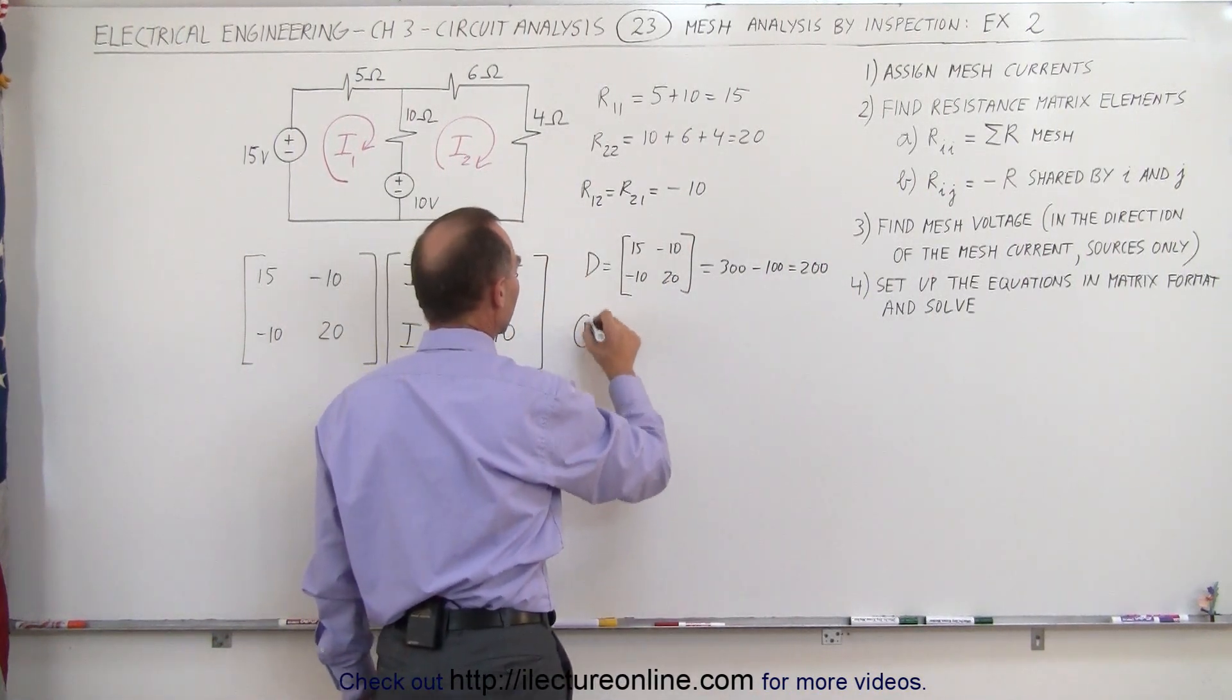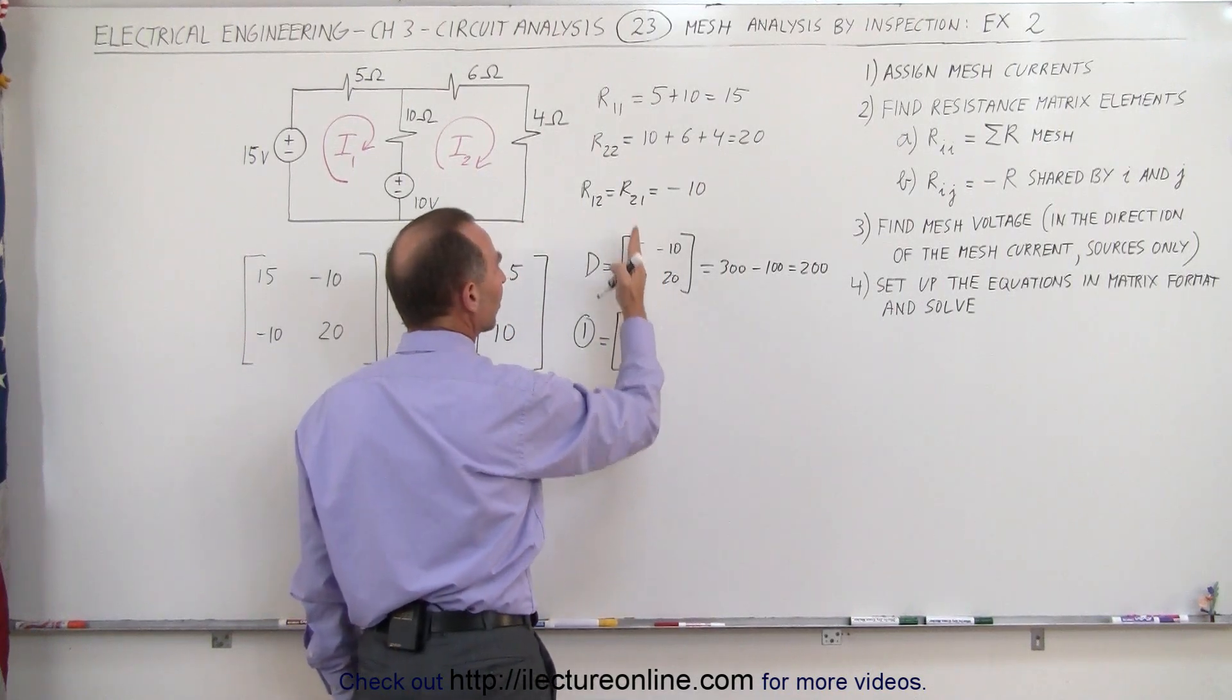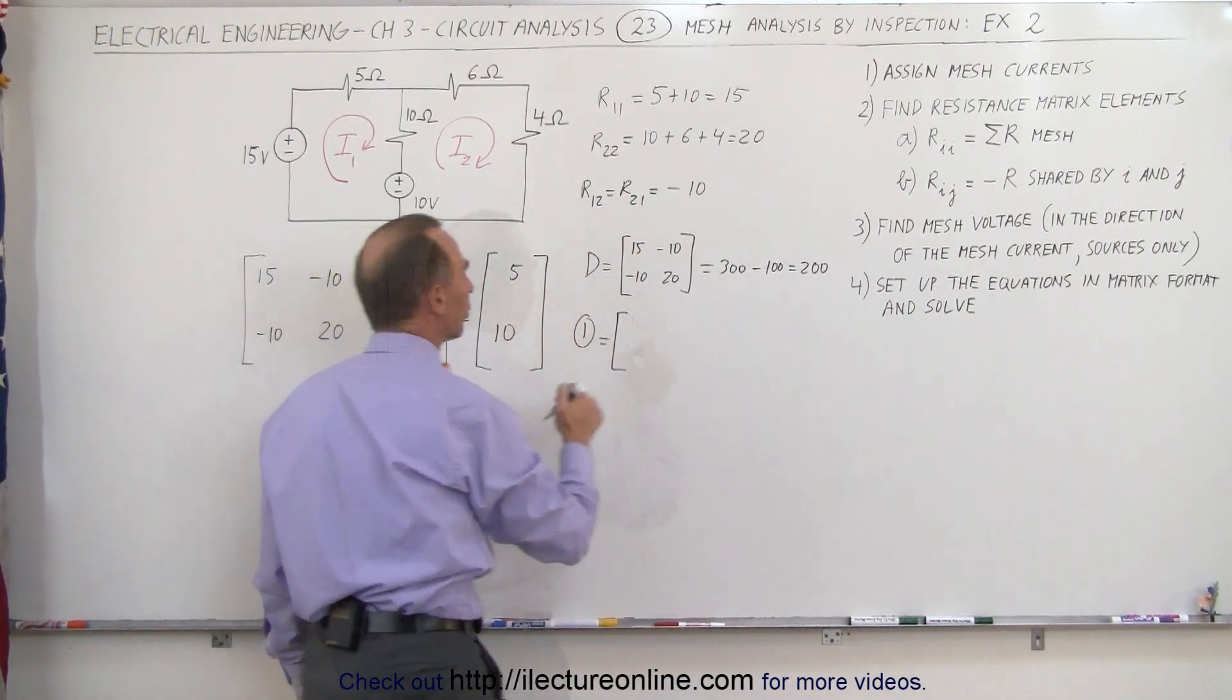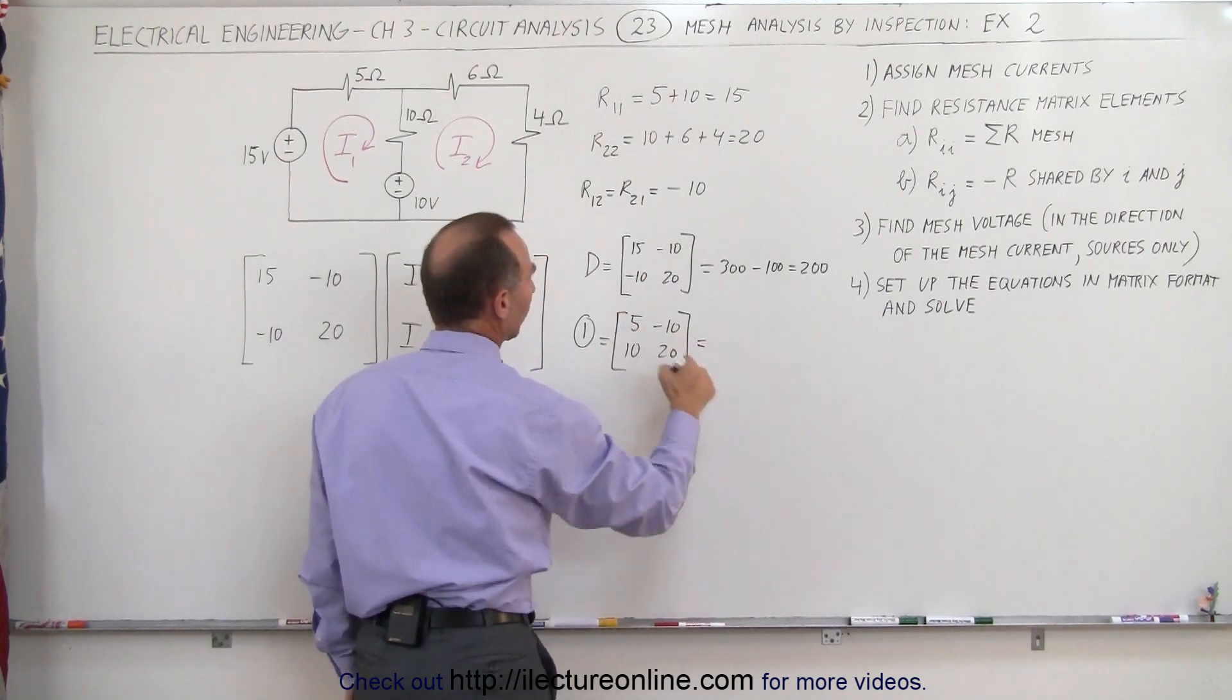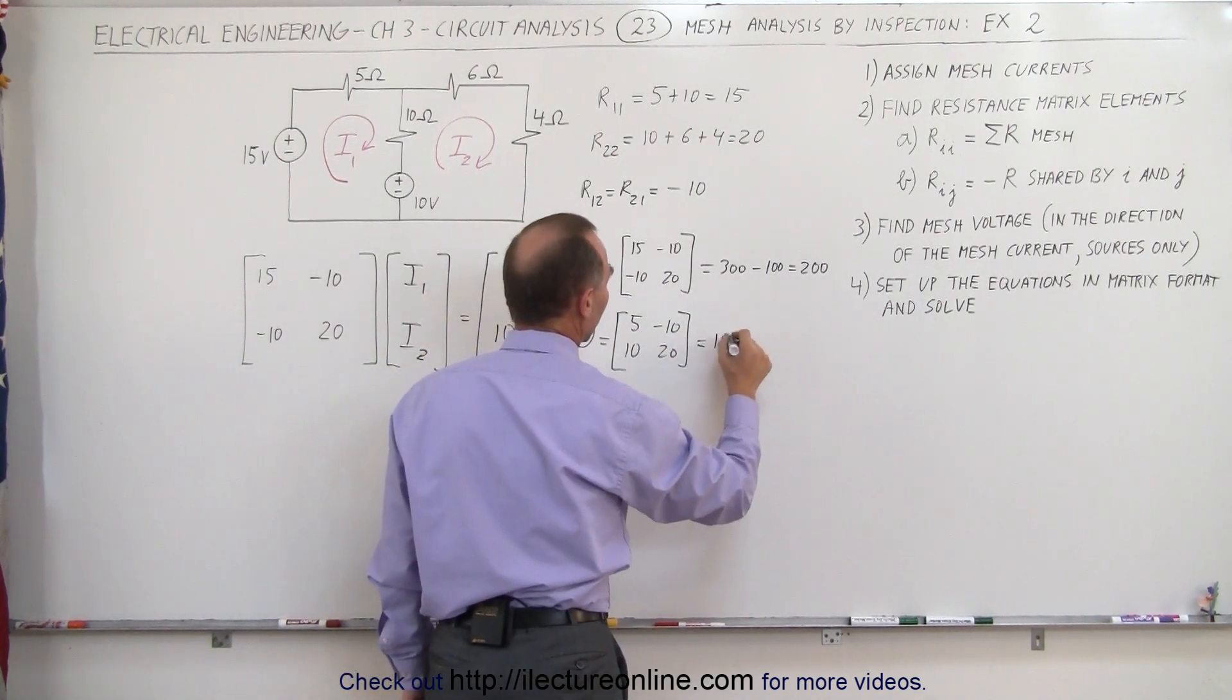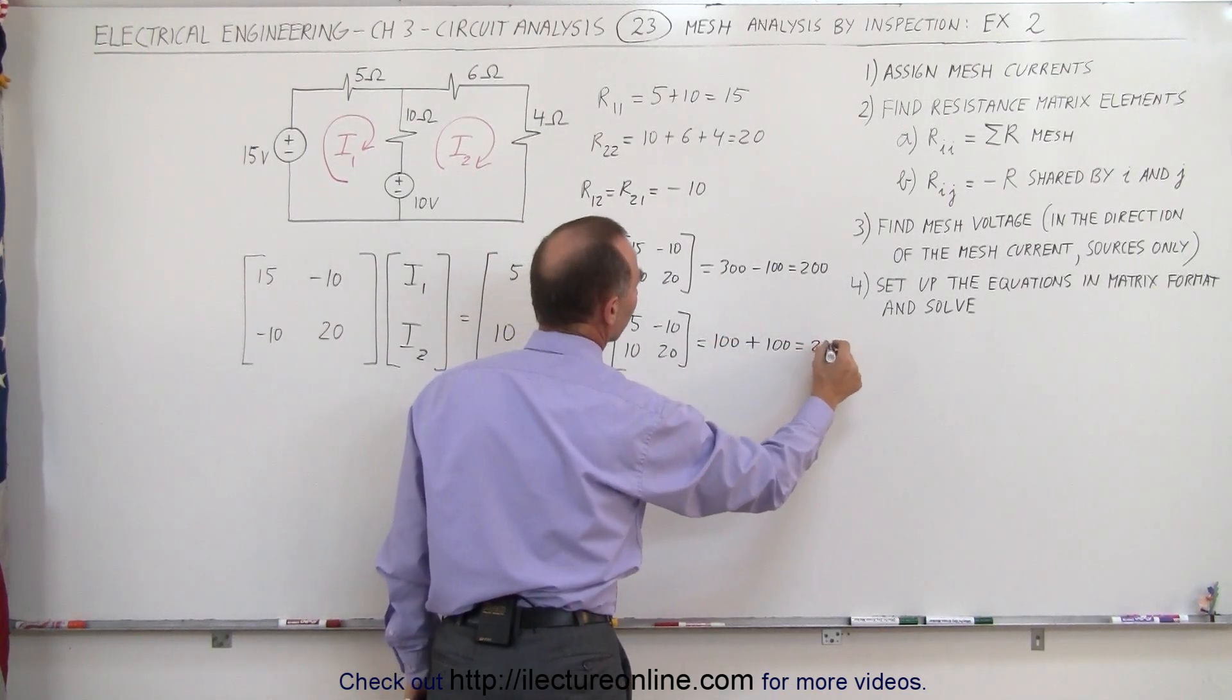Now we want to find the first matrix, which we find by taking the determinant matrix but replacing the first column by the voltages. 5 and minus 10, positive 20. This would be 5 times 20, which is 100, minus a minus plus 100, which is 200.